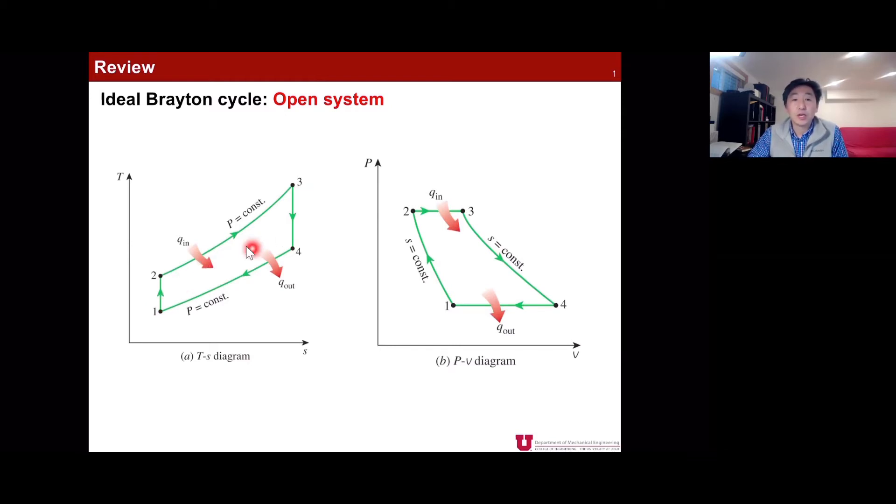From 2 to 3, we have heat input to the cycle, and from 4 to 1, we have heat rejection out of the gas turbine. We also can calculate the compression work and expansion work by doing the first law analysis of thermodynamics for an open system when we consider that as the steady state condition. We also draw the PV diagram, but I'm not going to talk a lot about this PV diagram.